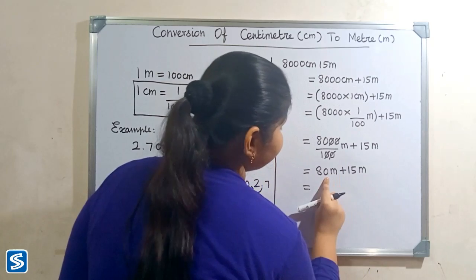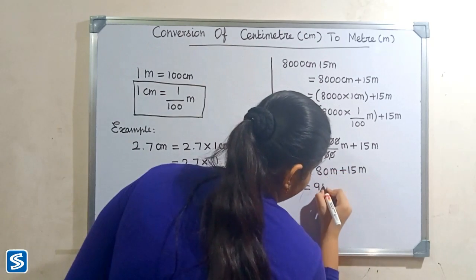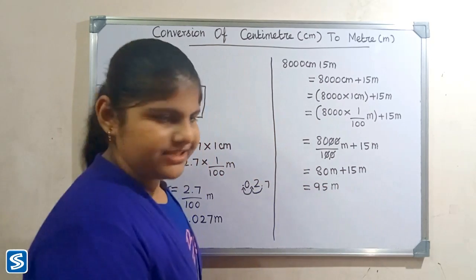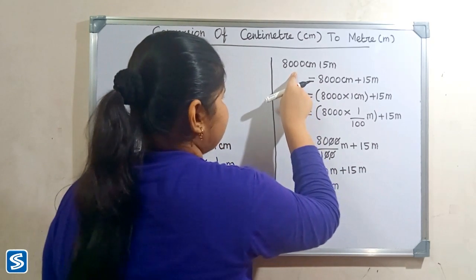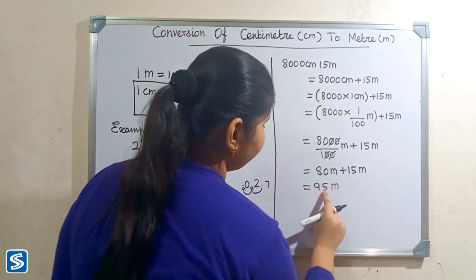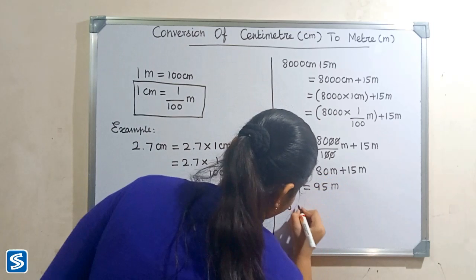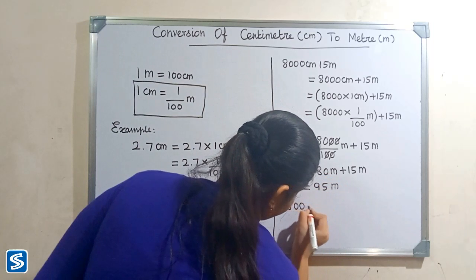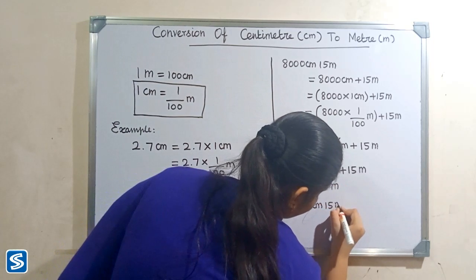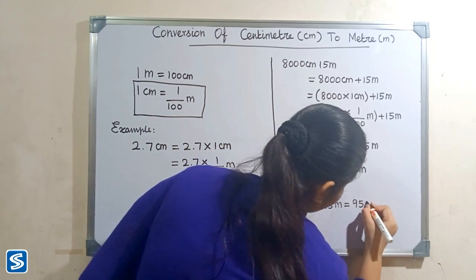So 80 meters plus 15 meters will be 95 meters. Therefore 8,000 centimeters 15 meters is equal to 95 meters.